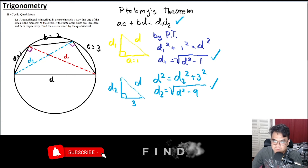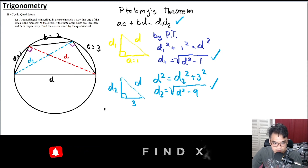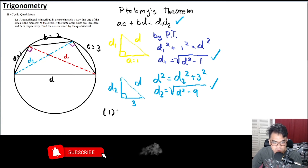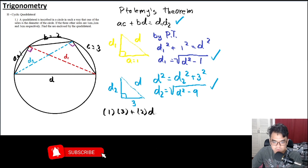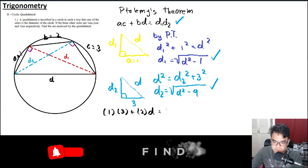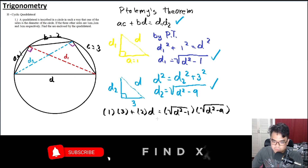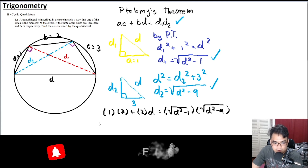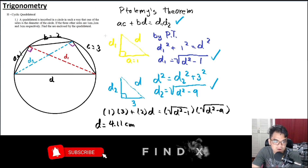Substituting d1 and d2 into Ptolemy's theorem: 1×3 + 2×d = √(d² − 1) × √(d² − 9). Solving this algebraically or with a calculator gives d = 4.11 centimeters. That's not the final answer yet — we still need to find the area.